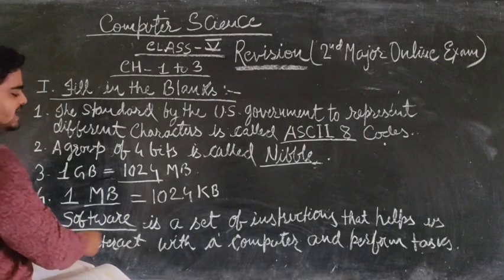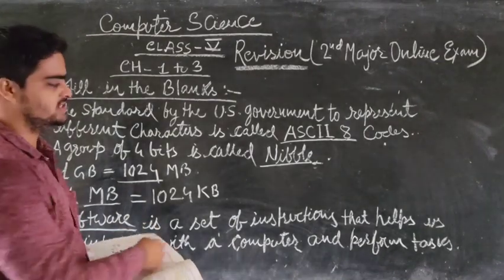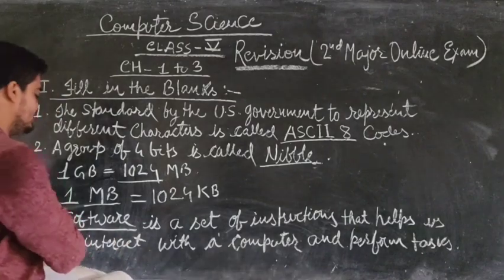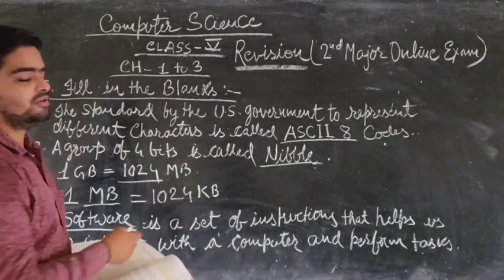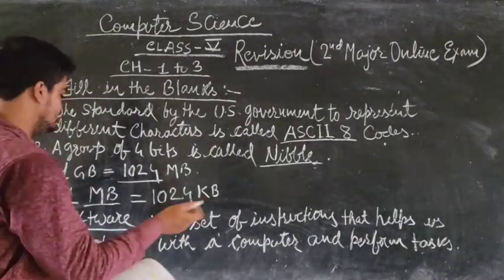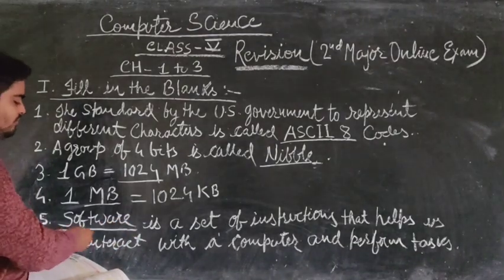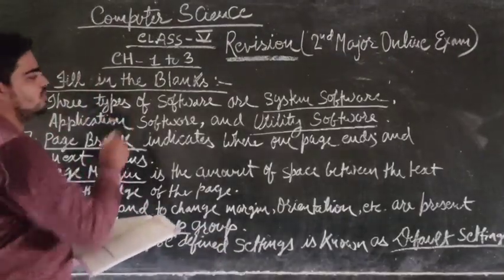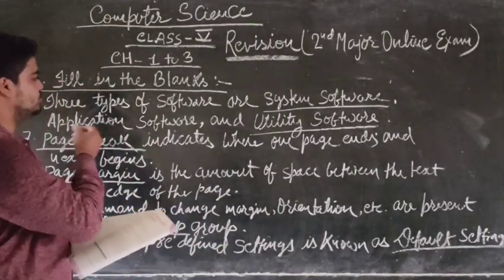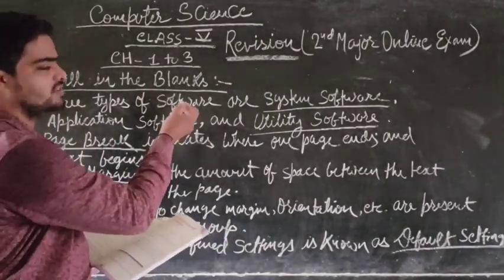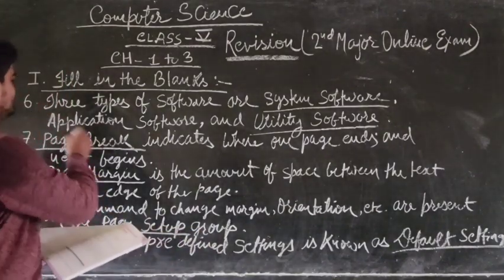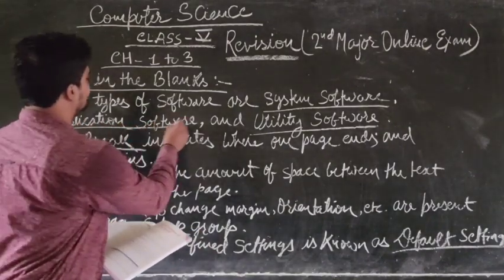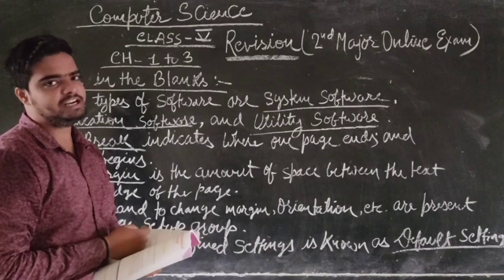Question 5: Dashed is a set of instructions that helps us to interact with the computer and perform tasks. The answer to this question is software. Question 6: Three types of software are dashed. The answer is first system software, second application software, and third utility software.